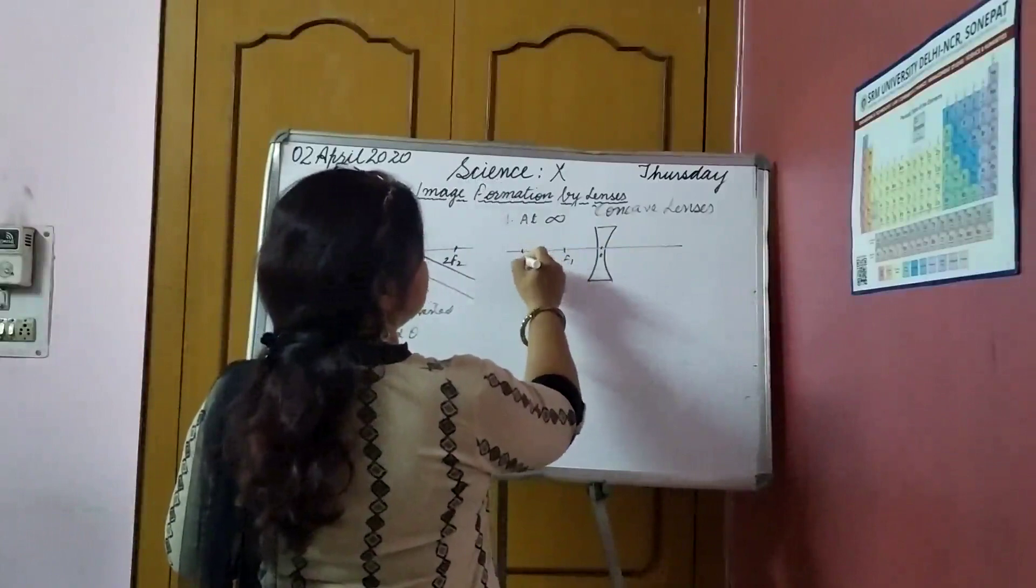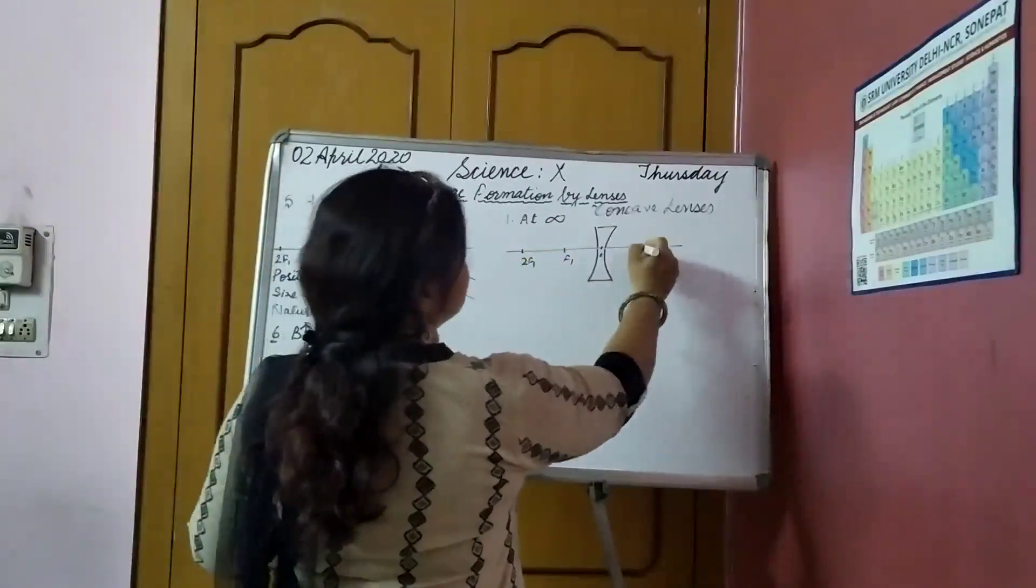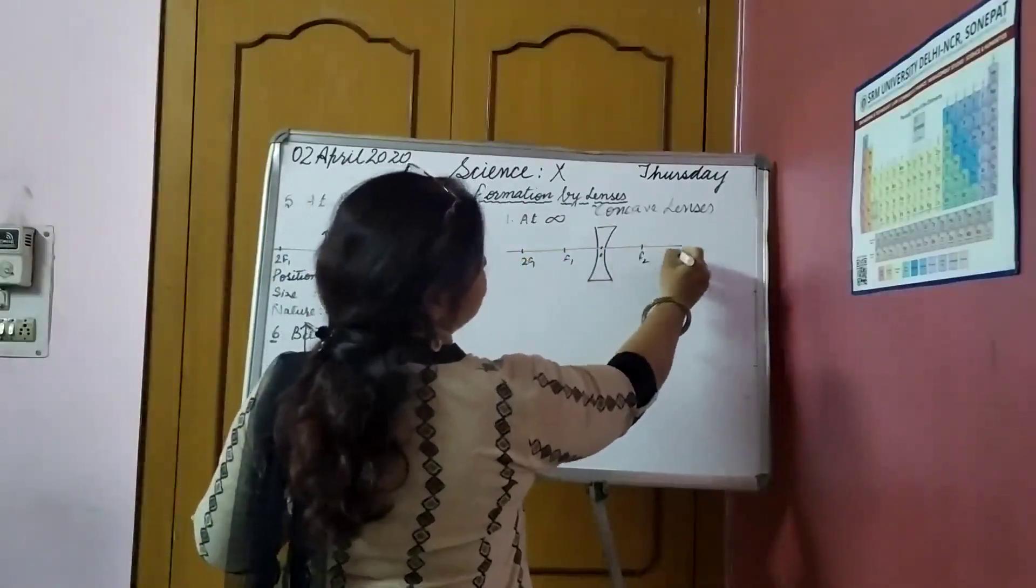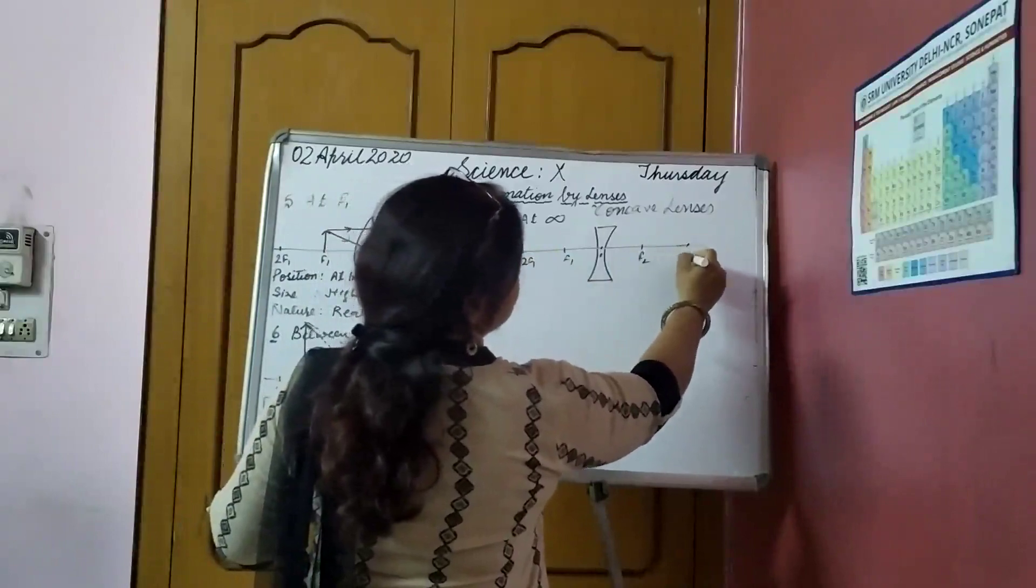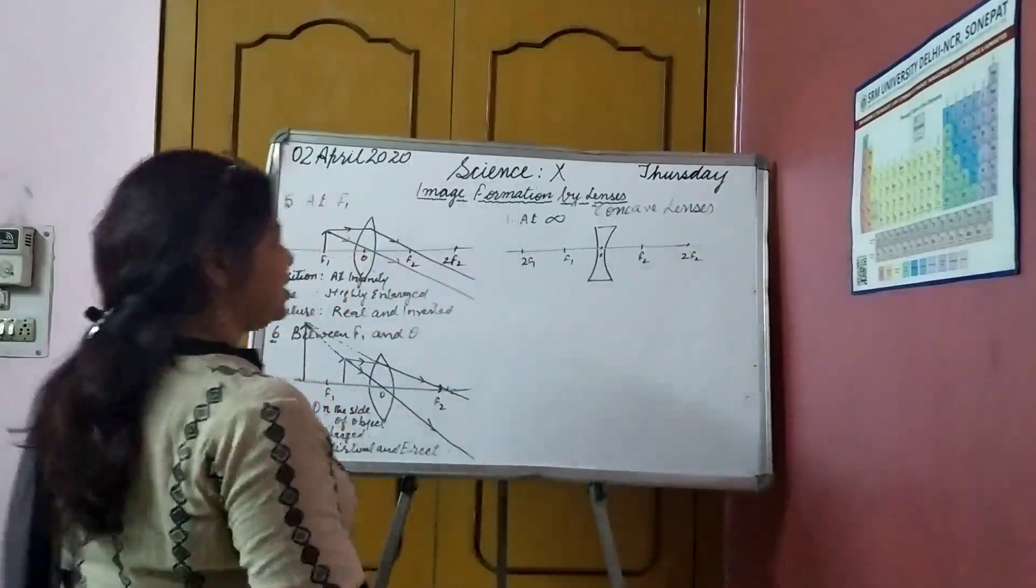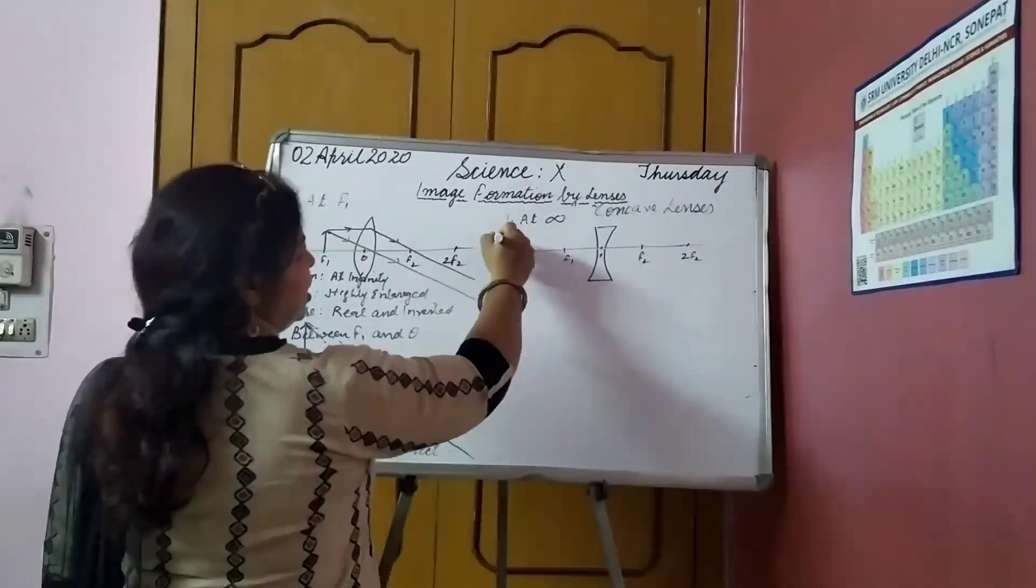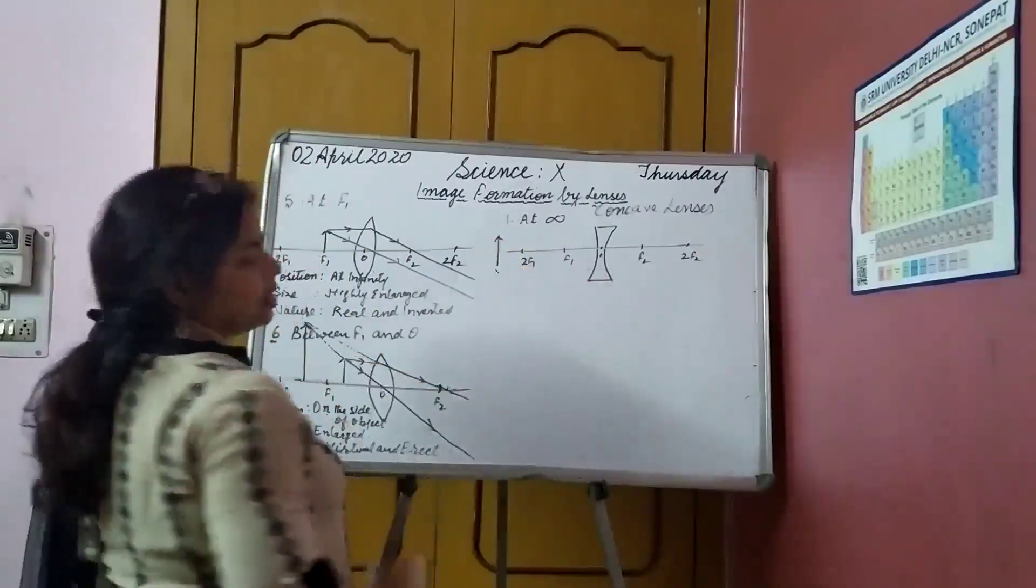This is f1. This is 2f1. And this is f2. This is 2f2. Okay. The object is placed here at infinity. It will show it like this.